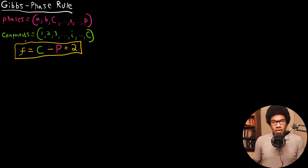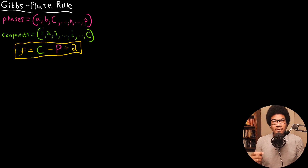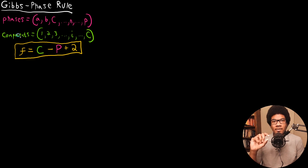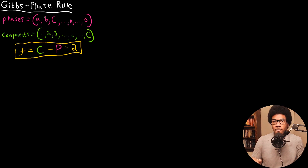In this video, we're going to look at the Gibbs phase rule. The Gibbs phase rule defines the number of independent parameters that you can vary in a system without disturbing the phase equilibrium.